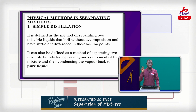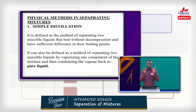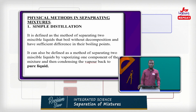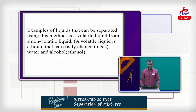The main point here is that the mixtures are miscible and there is no decomposition. If it goes through decomposition, then it changes from a physical change into a chemical change — and we are dealing with only physical changes. Simple distillation can also be defined as a method of separating two miscible liquids by vaporizing one component of the mixture and then condensing the vapor back into a pure liquid.